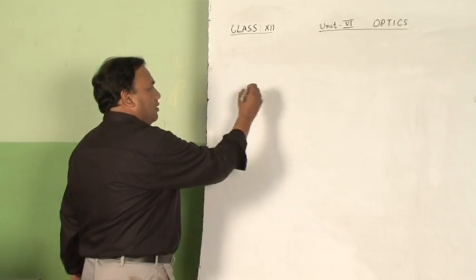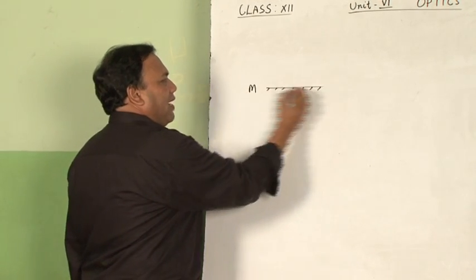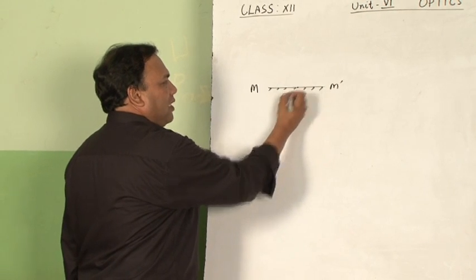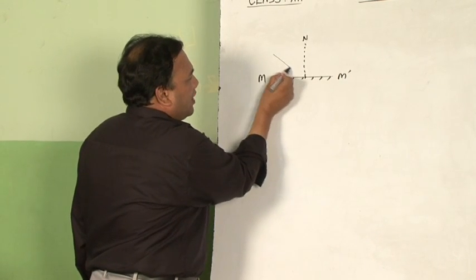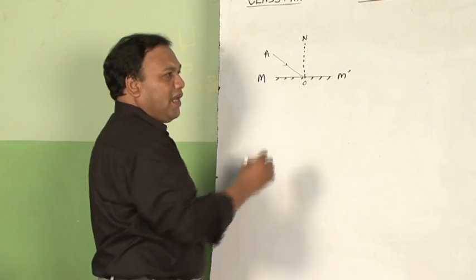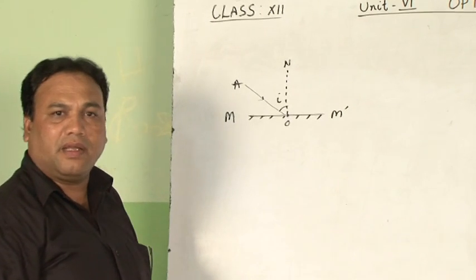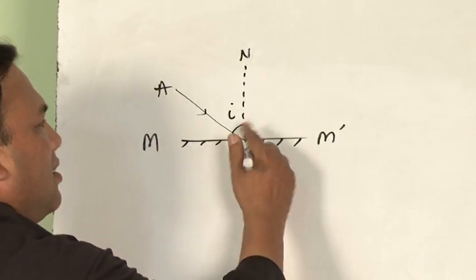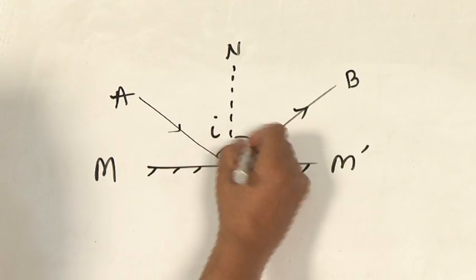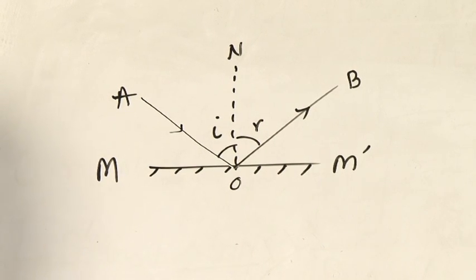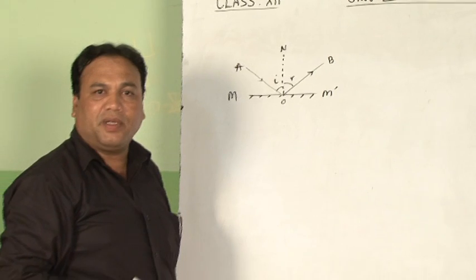I will take one highly polished surface, which is called a plane mirror, represented by M M-dash. I will select one point on it and draw a normal — a perpendicular line. A ray of light falling at that point O is represented by AO and is called the incident ray. It makes angle i with the normal, called the angle of incidence. The light gets reflected as ray OB, which makes some other angle with the normal.